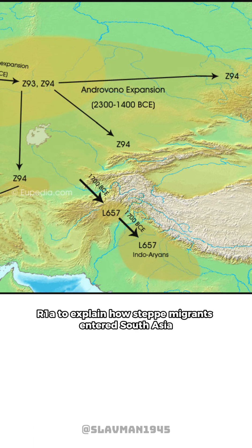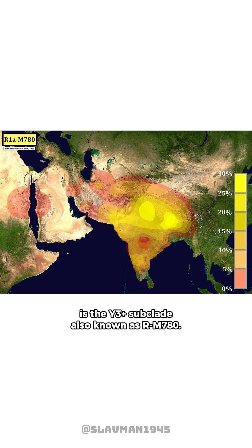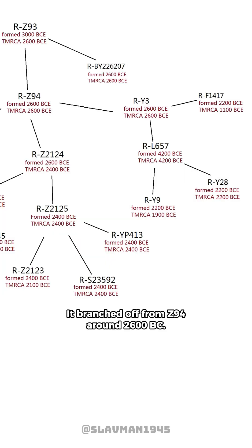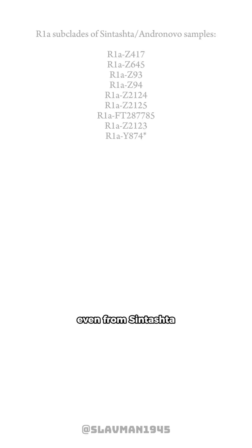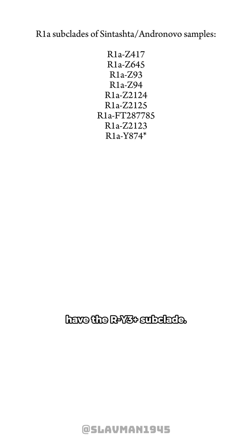A lot of steppe theorists often use R1A to explain how steppe migrants entered South Asia and brought Indo-Aryan languages with them. In India, the main R1A subclade, making up about 70% of all R1A in the YFUL database, is the Y3 plus subclade, also known as RM780. It branched off from Z94 around 2600 BC. None of the steppe samples, even from Sintashta or Andronovo sites dating to or after 2000 BC, have the RY3 plus subclade.